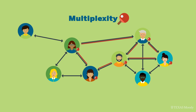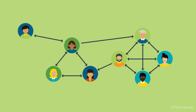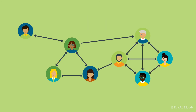We can also look for cliques — subsystems within a network distinguished by a relatively greater flow of information. In Startup, there are two distinct cliques. Just as there are properties of links, there are also properties of nodes. An isolate is a node with no or very few links. Who is the isolate in this organization? Alex is the isolate — Alex only communicates with Clara.